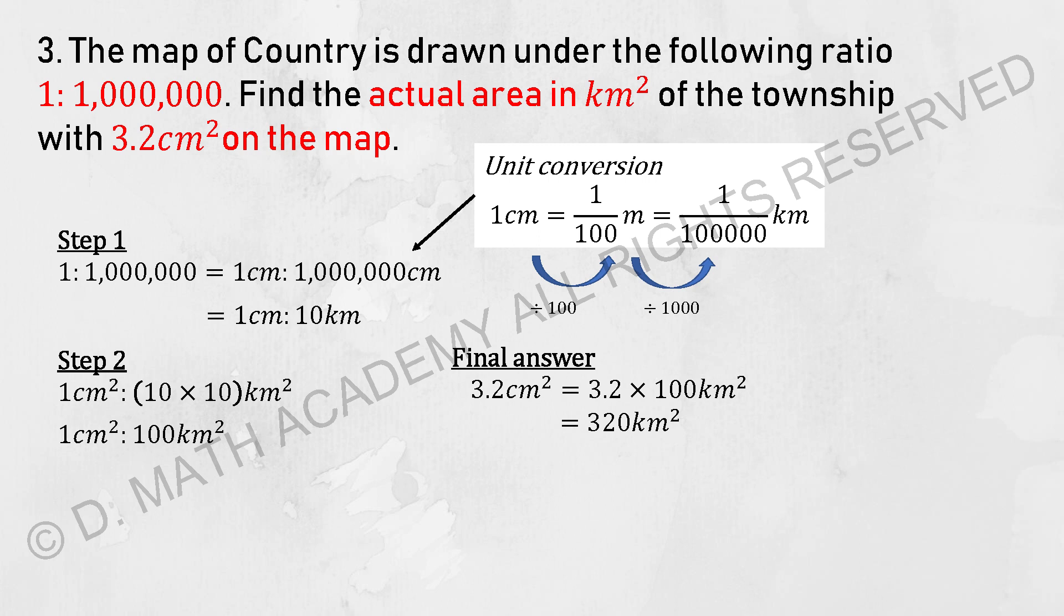1 million cm is actually 10 kilometers. And 1 cm squared is actually 10 kilometers times 10 kilometers. Then you should get 1 cm squared equivalent to 100 kilometer squared. Since we have 3.2 cm squared on the map, multiplying this by 100 kilometers squared, you should get 320 kilometers squared as the answer.